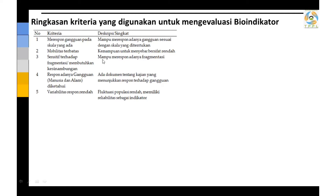Misalnya, jika ada tumbuhan di suatu hutan menjadi sasaran penebangan, bioindikator yang digunakan harus memiliki kemampuan yang terbatas untuk meninggalkan hutan dan menghindari gangguan, artinya tetap harus organisme yang hidup menetap. Yang ketiga adalah sensitif terhadap fragmentasi atau membutuhkan kesinambungan, mampu merespon adanya fragmentasi, berkaitan dengan siklus nutrisi. Yang keempat adalah respon adanya gangguan baik oleh manusia maupun alam, dengan dokumen kajian yang menunjukkan respon terhadap gangguan yang tidak bisa diprediksi.